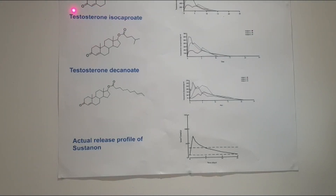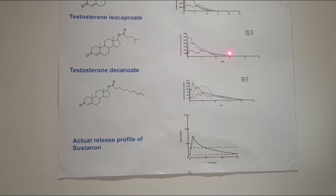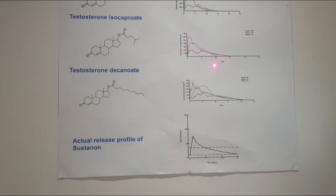The third ester is testosterone isocaproate. Here we've got this intermediate size ester side chain, which produces this release profile in three subjects. Notice the different variability between each subject — that tells us that everyone genetically will react to a testosterone ester in different ways. In this subject, the isocaproate lasted up until day 15.